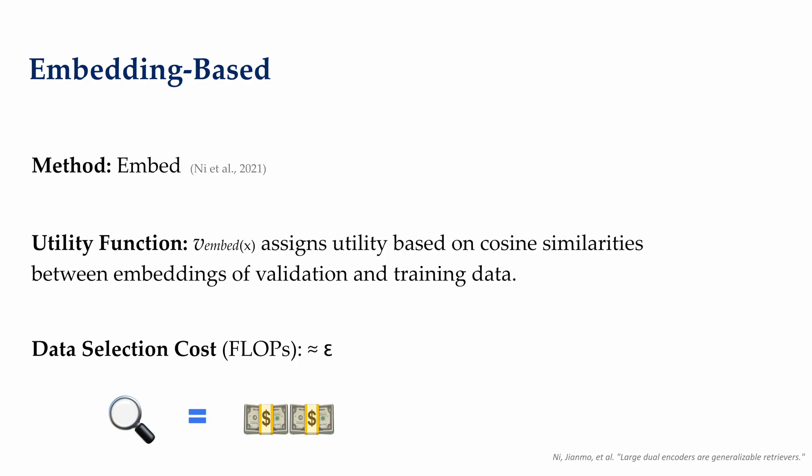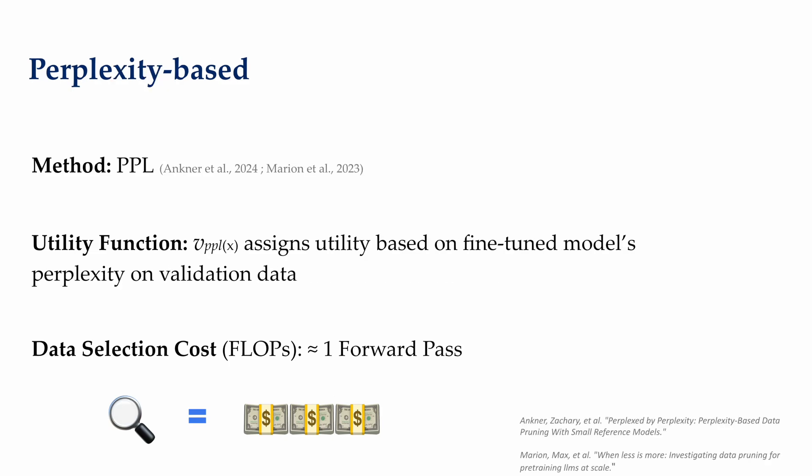Another straightforward method is retrieving the most similar examples to the validation data sets by some cosine similarity of sentence embeddings. This involves embedding both the training and the validation data points with a bird size model. The compute needed is more than BM25, but still quite small compared to usual scales of LLMs. We'll denote the compute cost by the symbol epsilon.